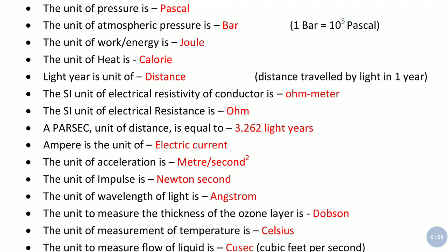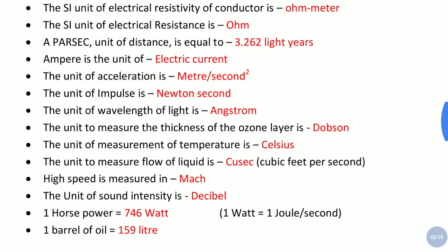One parsec, again it is a unit of distance, astronomical distances, and is equal to 3.262 light years. Ampere is the unit of electric current.